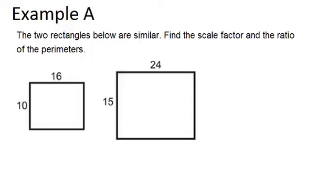In this video, we will look at a few examples to practice working on area and perimeter of similar polygons. In example A, it says the two rectangles below are similar. Find the scale factor and the ratio of the perimeters.